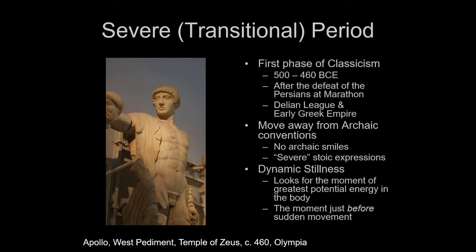All of this comes together to give us the first phase of classicism called the severe period, or sometimes the transitional period. The faces are very severe and mask-like — not the archaic smile, but stoic expressions, not overtly emotional. The bodies are very still, but it's a dynamic stillness. Artists try to find the moment of the most intense potential energy — the body just before movement occurs — to make it look as close to life as possible.